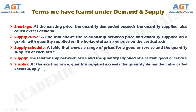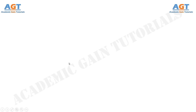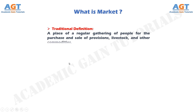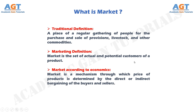Now let's look at what is market. By the traditional definition, market is a place of regular gathering of people for the purchase and sale of provisions, livestock, and other commodities. By the marketing definition, market is the set of actual and potential customers of a product. According to economics, market is a mechanism through which the price of products is determined by the direct or indirect bargaining of buyers and sellers.